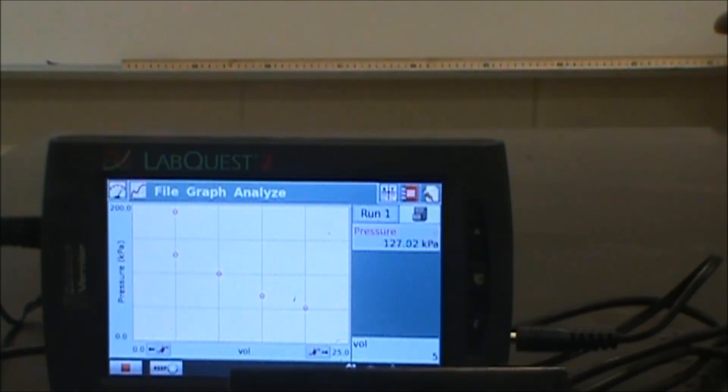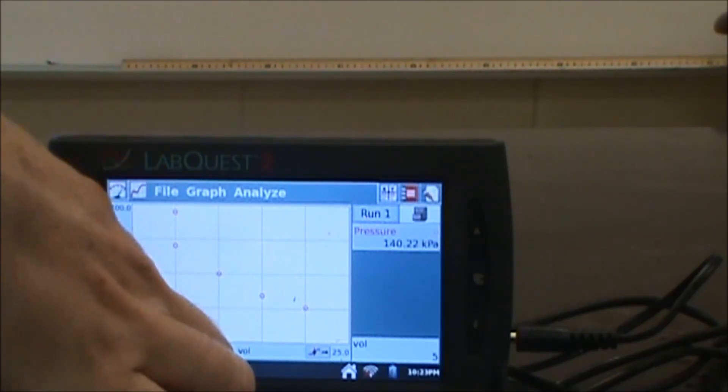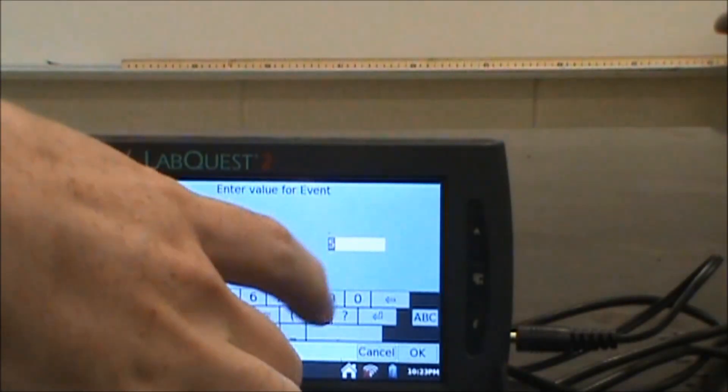This is now plotting my pressure and volume for me. Now I'm going to go ahead and take this down to 7. I'll hit keep. Type in 7.